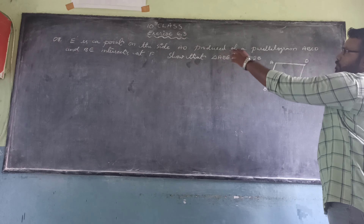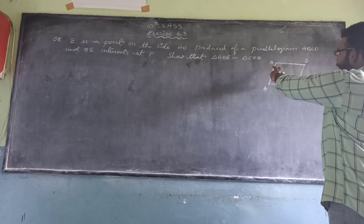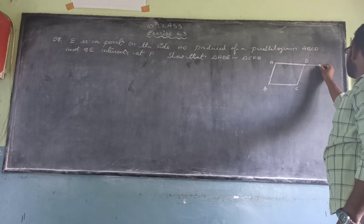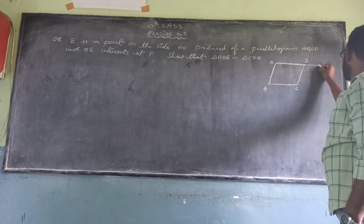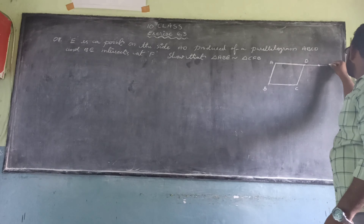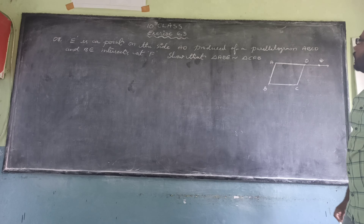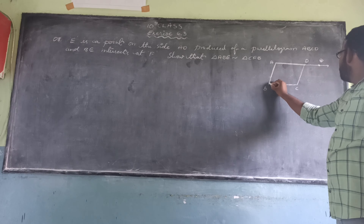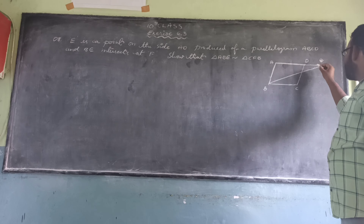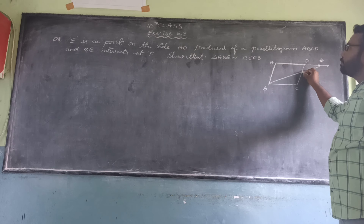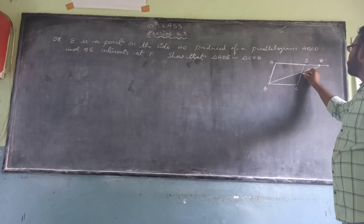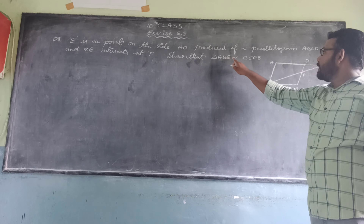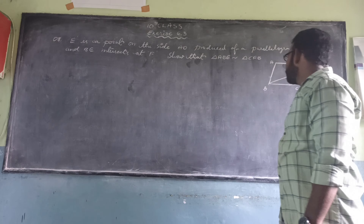Here, ABCD is a parallelogram. E is a point on the side AD produced — if you produce AD, then E is a point on that production. BE is a line segment which intersects CD at F. We have to prove triangle ABE is similar to triangle CFB.